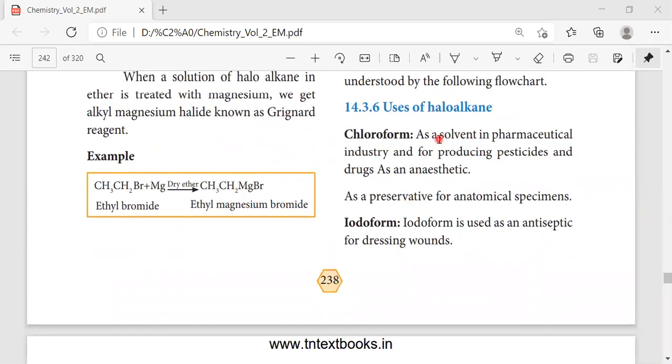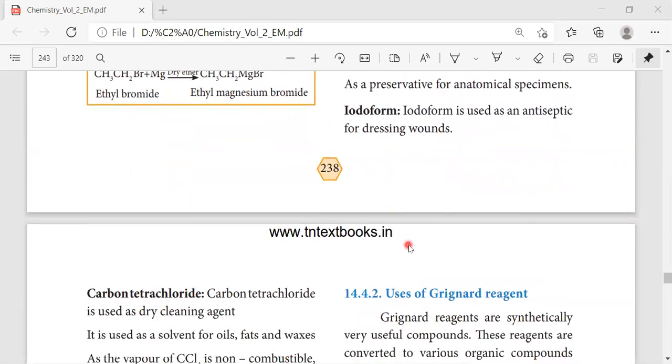Now comes the uses of haloalkanes. Haloalkanes have lots of uses and applications. First is chloroform. Chloroform is used as a major solvent in the pharmaceutical industry, also for producing pesticides and drugs which act as anesthetics. In surgery, chloroform is used, and also for preserving anatomical specimens.